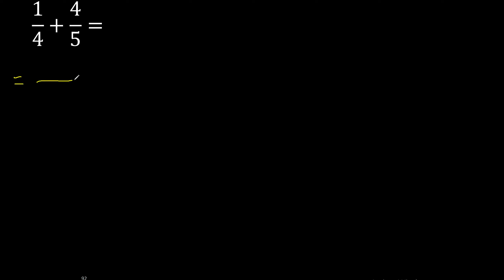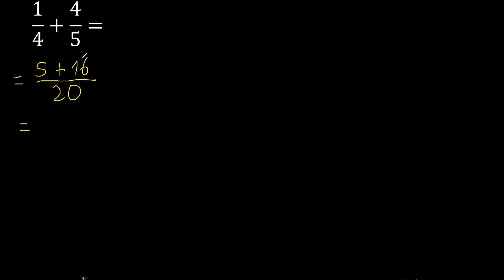First multiply like this: 5 multiplied by 1 is 5, 4 multiplied by 4 is 16, 4 multiplied by 5 is 20. Result is 21. 20 cannot be simplified, but 21 is greater than 20.